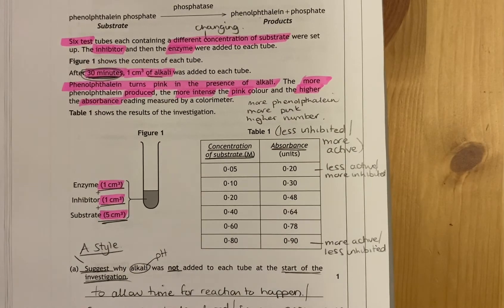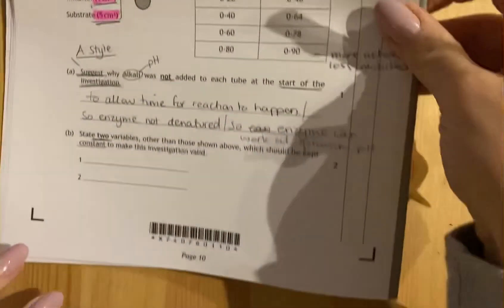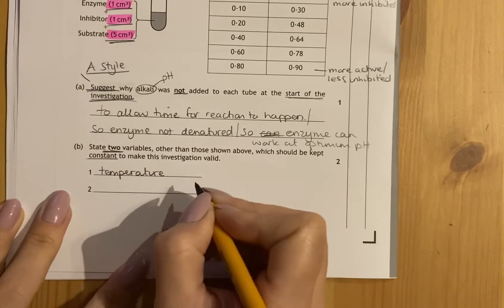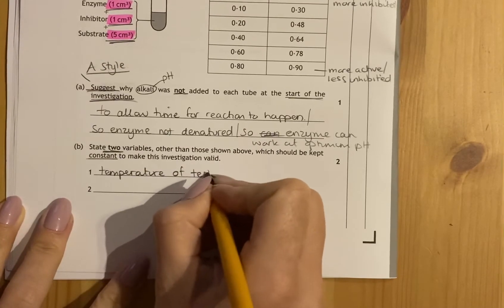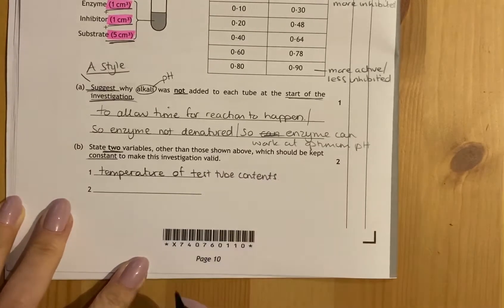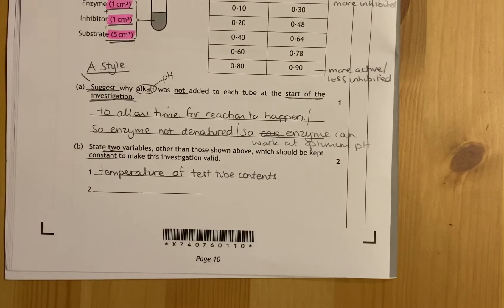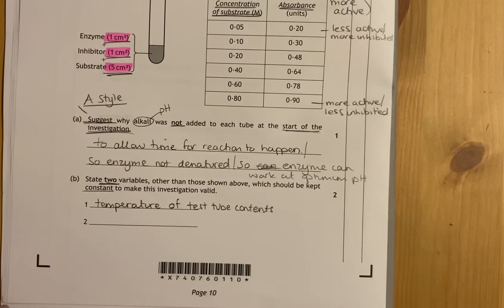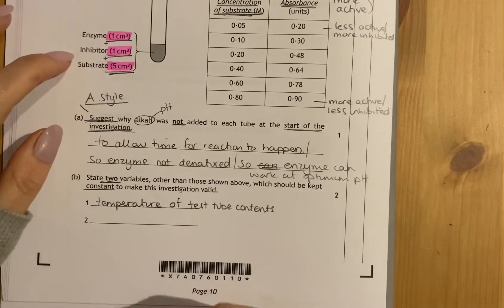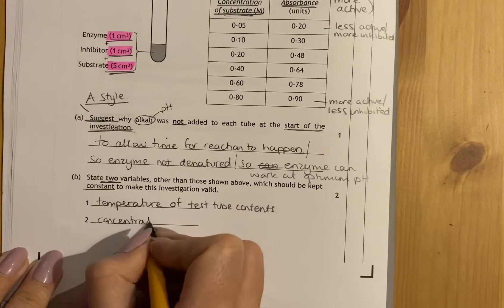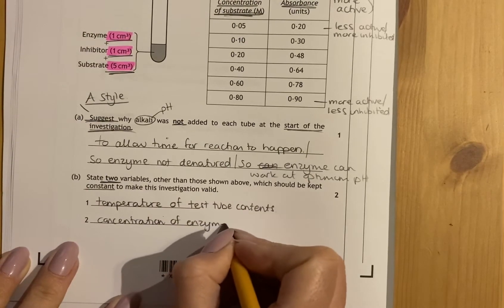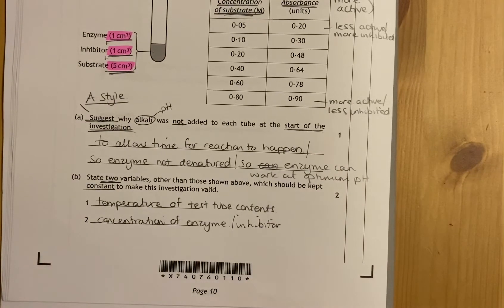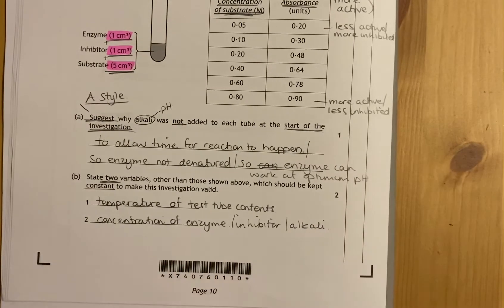You've got to think of what is left over based on this experiment. If this is an enzyme experiment, it'll be affected by pH and temperature. So for example, the temperature would be something that could affect it and would need to be kept constant. But you'd have to say temperature of the test tube contents or of the solutions. Yes, they've told us the volume of enzyme, inhibitor and substrate, but they've not told us anything about the concentration of the enzyme or the concentration of the inhibitor. So you could say concentration of enzyme, or phosphatase, or concentration of the inhibitor, and also concentration of the alkali.